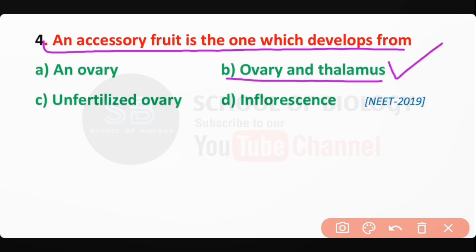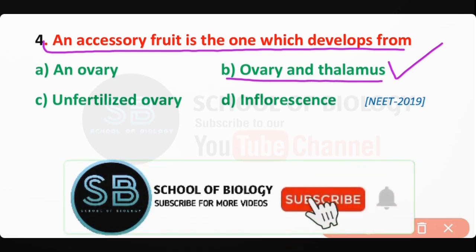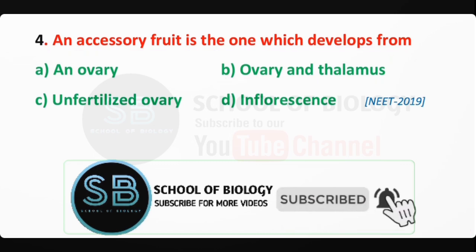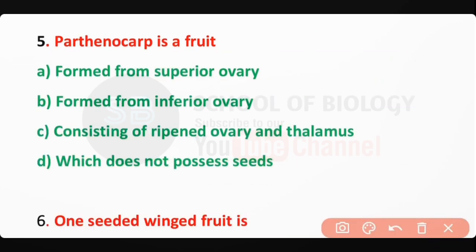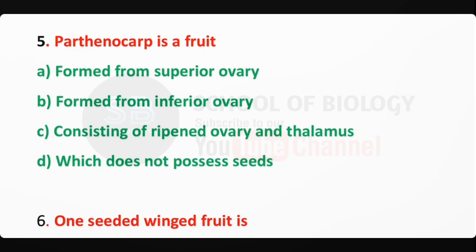Before moving to the next question, I request you to please subscribe to the channel if you haven't already. Q5: A parthenocarpic fruit is one which does not possess seeds — correct answer is option D.